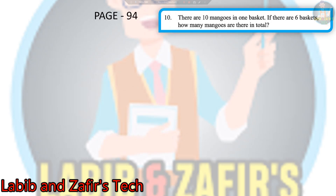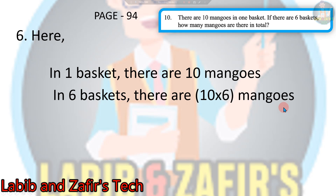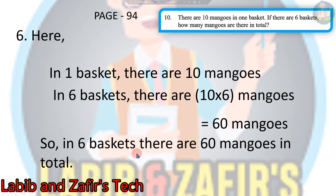Now we are on number 6 word problem. The question is: There are 10 mangoes in a basket. If there are 6 baskets, how many mangoes are there in total? In one basket there are 10 mangoes, so in 6 baskets there are 10 multiplied by 6 mangoes. We multiply 10 by 6 to find the number of mangoes in 6 baskets. 10 into 6 is equal to 60 mangoes. So in 6 baskets there are 60 mangoes in total.